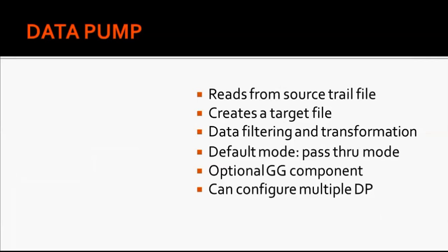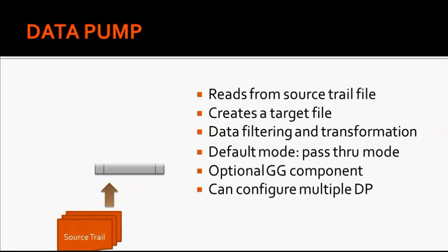The next component is data pump. The job of the data pump process is to read records from the source trail file and send them over a TCP/IP network to the target servers. Data pump creates a target file on the target server which receives data sent over the network. The best part about data pump is it can be configured for data filtering, meaning it sends only data which meets certain conditions. The data pump can also be configured to transform data, for example changing date format or converting lowercase to uppercase. When no data filtering or transformation is configured, it is known as the pass-through method, where data pump simply passes the data to the target server.